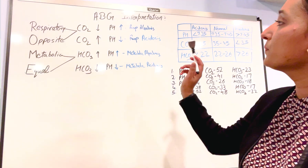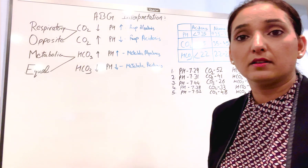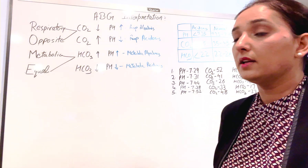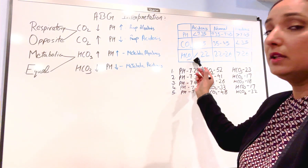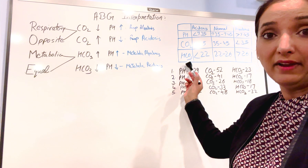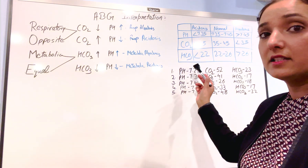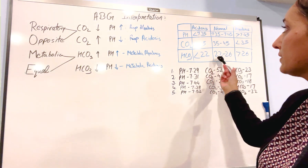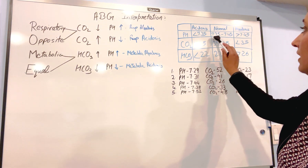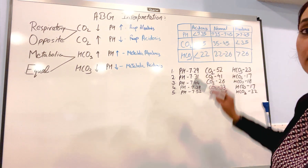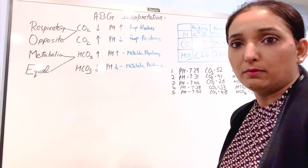Today, in order to learn ABG interpretations, first of all you need to know what are normal and abnormal values. So let's discuss first what are normal values. As you all know, pH 7.35 to 7.45 is the normal value.